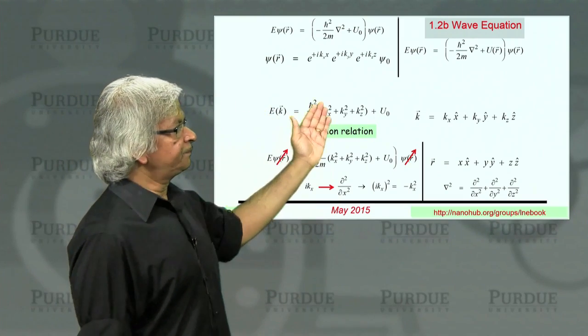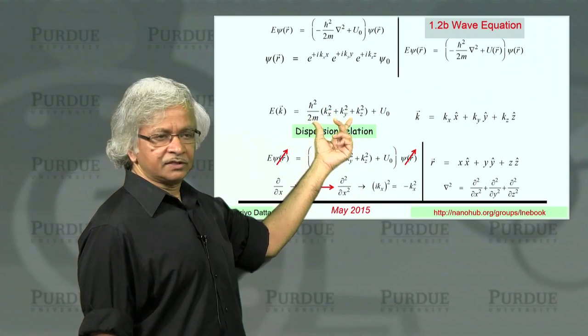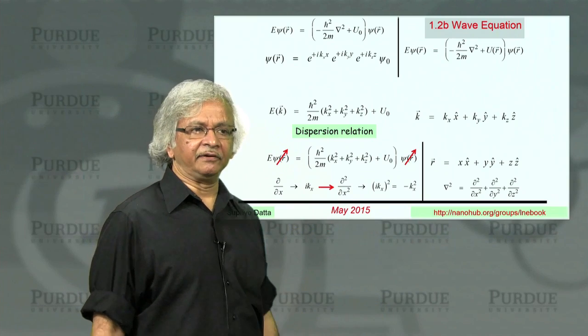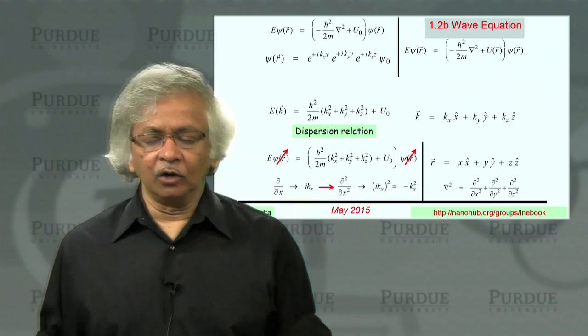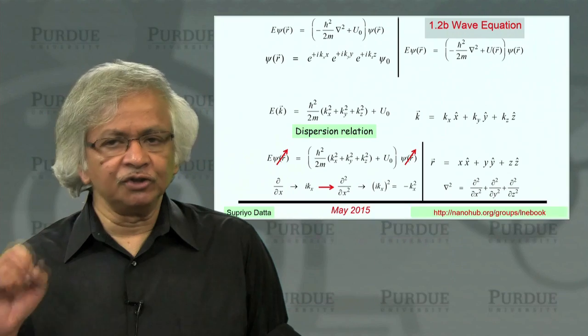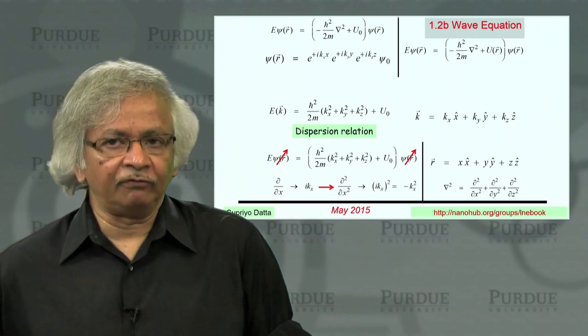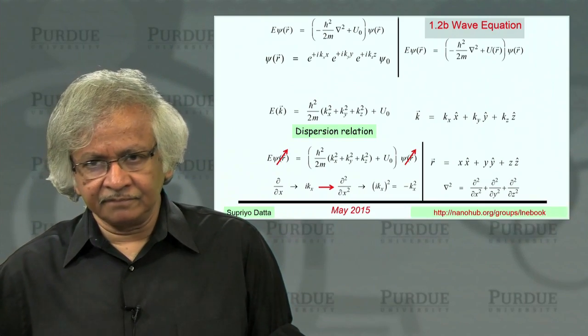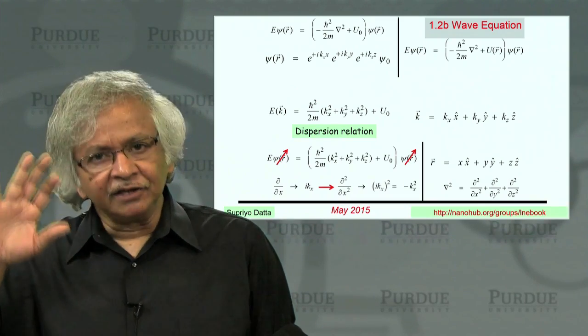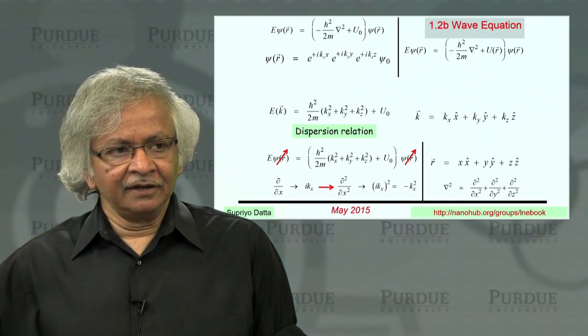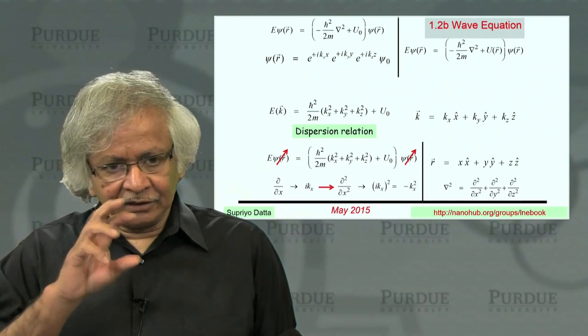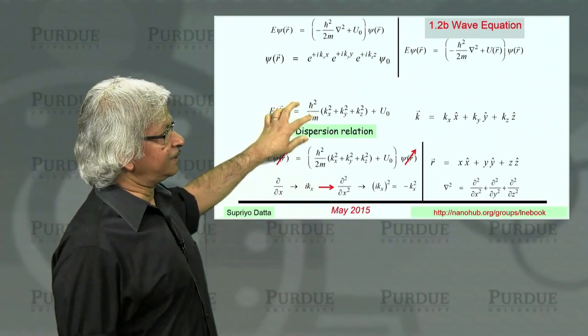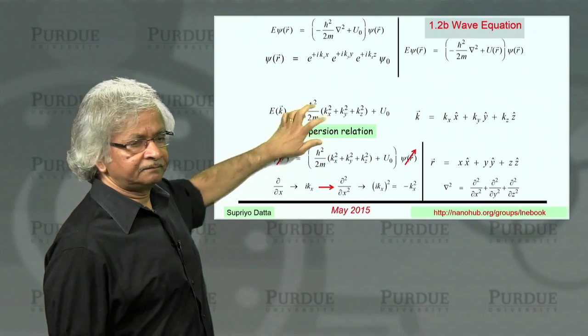Overall then, you get Eψ equals that number times ψ. You could cancel out the ψs and you get an expression for the energy. E equals U0 plus this function of k. This is what's called the dispersion relation, the E-k relation. For waves in a homogeneous medium, that's usually a very fundamental property. You'll notice that when you think of electrons as particles, we talked about an energy-momentum relation. In the wave viewpoint, the E-k relation looks just like the energy-momentum relation, except that instead of momentum, you have ℏk.